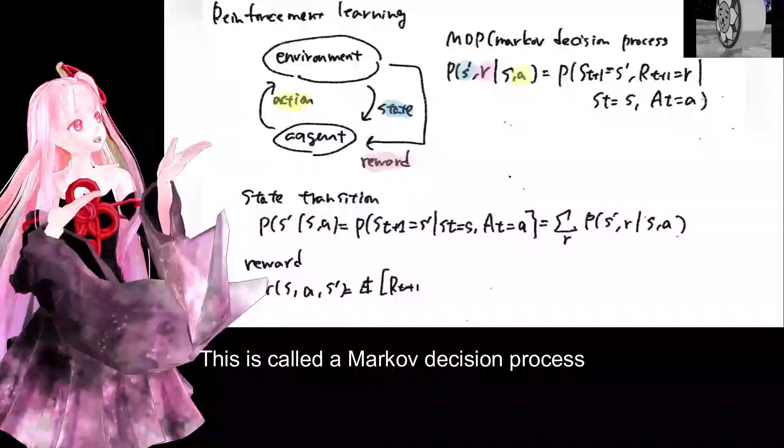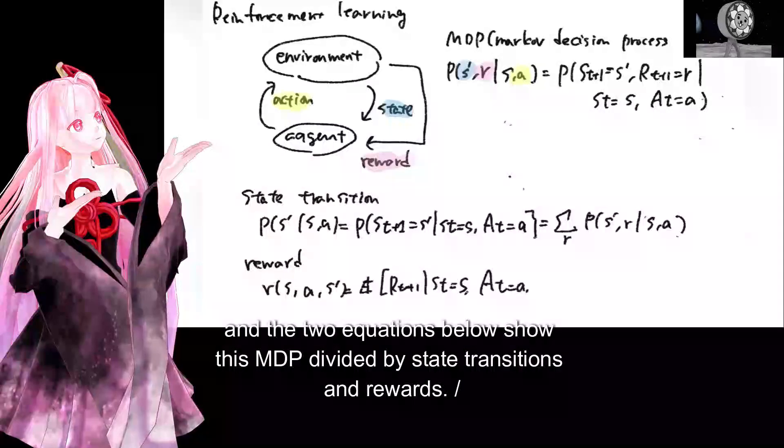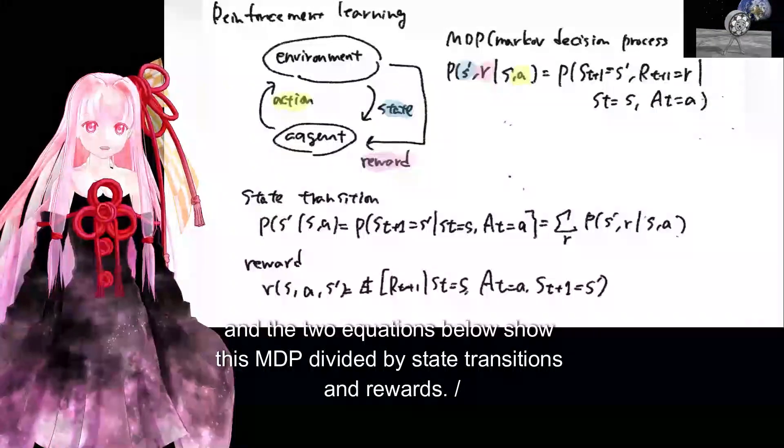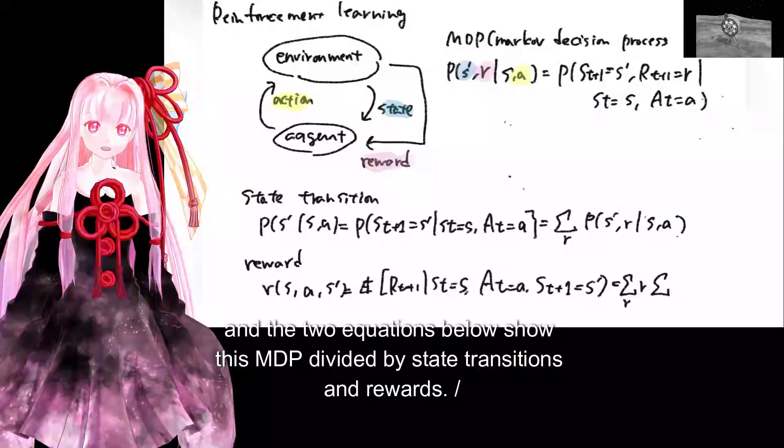This is called a Markov decision process. And the two equations below show this S divided by state transitions and rewards.